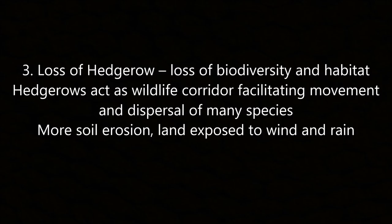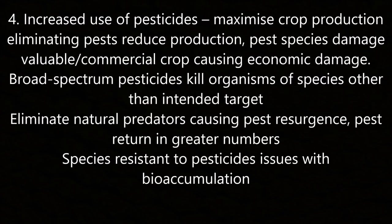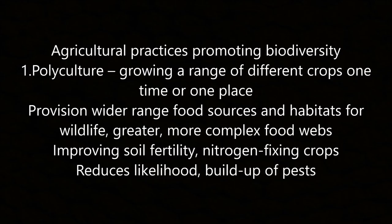(3) Loss of hedgerows: loss of biodiversity and habitat as hedgerows act as wildlife corridors facilitating movement and dispersal of many species; more soil erosion as land is exposed to wind and rain. (4) Increased use of pesticides: broad-spectrum pesticides kill organisms of other species beyond the intended target, eliminating natural predators and causing pest resurgence. Some pest species develop resistance to pesticides and there are issues with bioaccumulation.